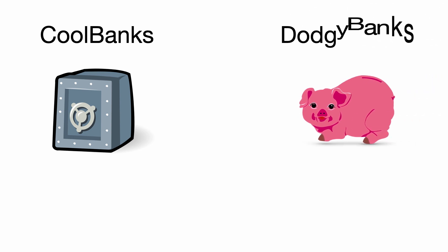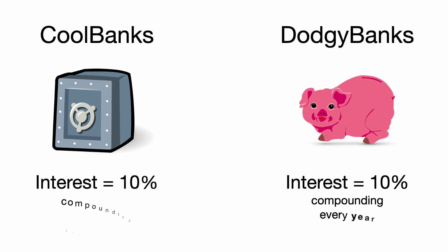Now there's actually one more thing we have to talk about with compound interest, and that's related to how frequently you're actually paying the interest. In our example before, the bank says that they would be willing to charge interest every single year. But what happens if they actually start charging you more frequently? Let's say we've got two banks. The first bank is called, I don't know, Cool Banks, and the other one is called Dodgy Banks.